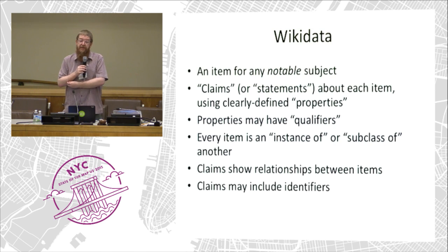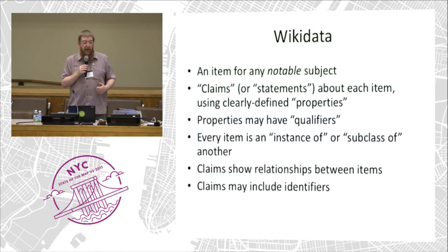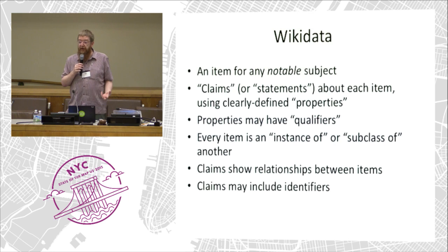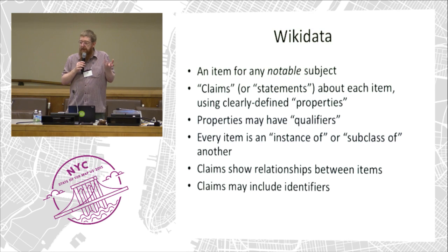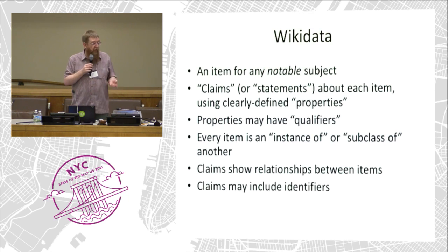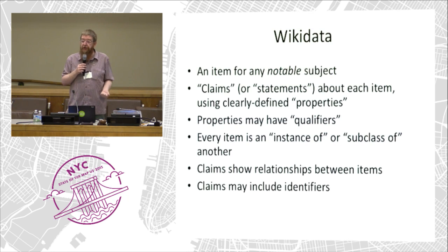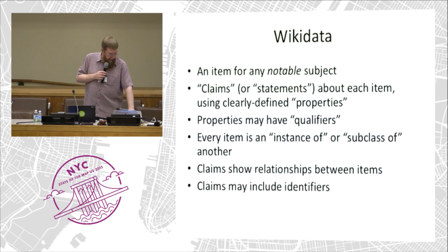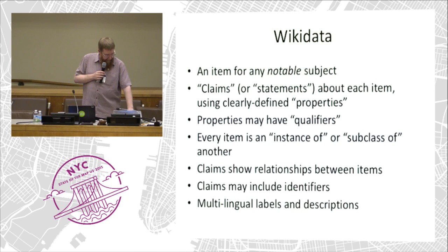Claims can include identifiers — unique identifier numbers or URLs in other databases. So this person has a VIAF identifier in library catalogs that uniquely identifies them. A building might have a designated number in the New York directory of buildings, or a historic building has an identifier in the list of scheduled monuments for a country or city. Those identifiers are very useful to people who want to link data together.